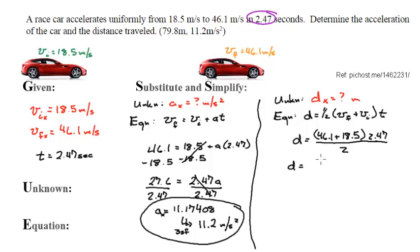Displacement equals, when I solve what's in the parentheses, I get 64.6 times 2.47, and that whole quantity divided by 2. And then, if I solve the top, I get 159.562 divided by 2. Displacement in the x equals 79.781 meters. And since there's only 3 sig figs, it's going to be 79.8 meters.